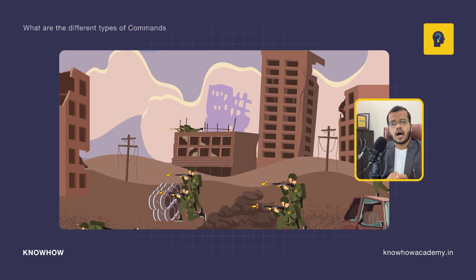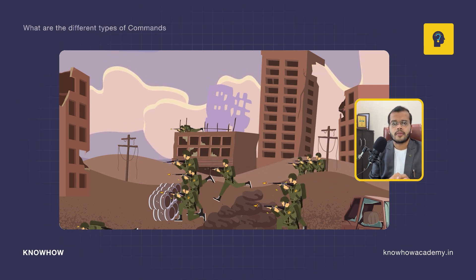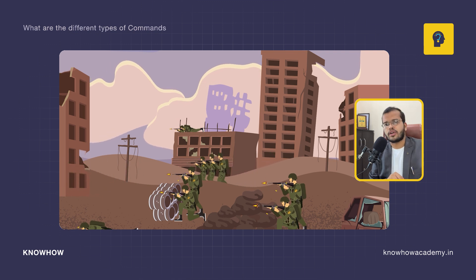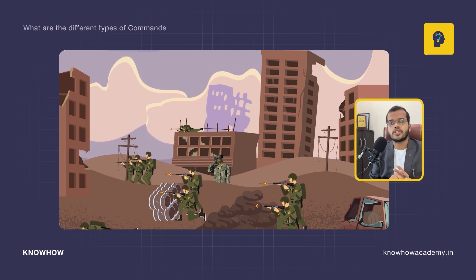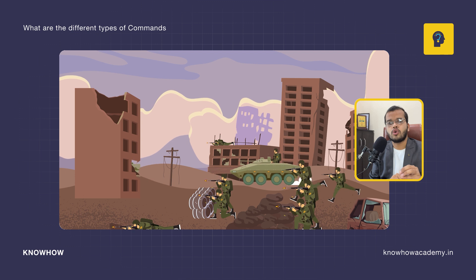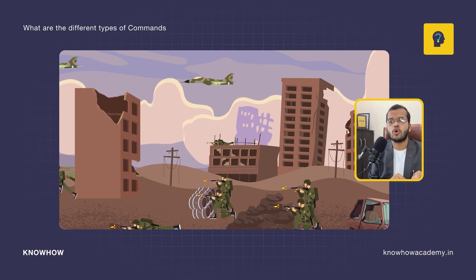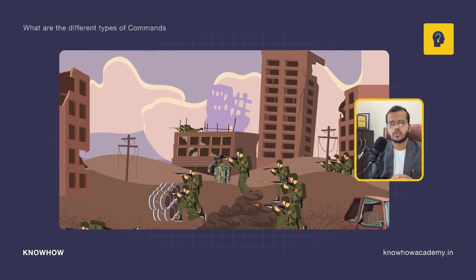If I walk you through the example of the army — you take any army, not specifically any particular army, but army people across the world — army people will not do any work without a command received from their senior officers. Any single work: if they want to go to some location, they have to follow the commands of their officers. If they want to do some firing, they have to get orders from their officers. If they have to go investigate or inquire about some vehicle passing in that zone, again they have to get the command from their superior officers.